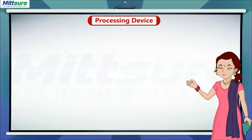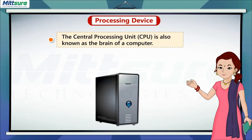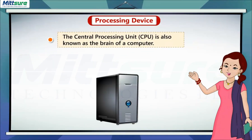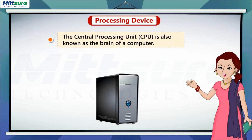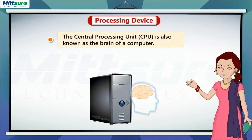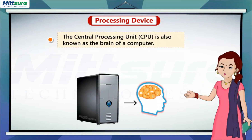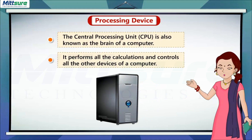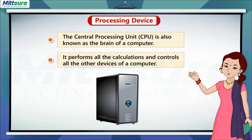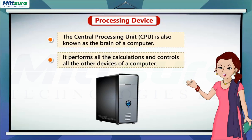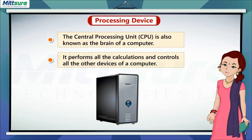Processing Device: the central processing unit, or CPU, is also known as the brain of a computer. It performs all the calculations and controls all the other devices of a computer.